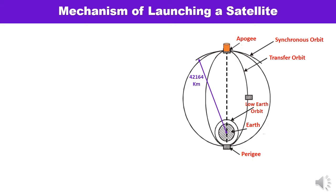In this diagram you can see there is the Earth. Around the Earth there is a low earth orbit, LEO. There is a transfer orbit, which is a temporary orbit. Then there is the synchronous orbit in which the satellite is to be placed. The closest point from the center of Earth is the perigee, and the farthest point is the apogee. The altitude of the orbit at which the satellite is to be placed is 42,164 km.